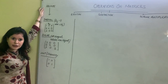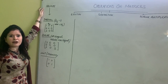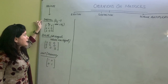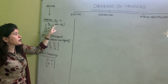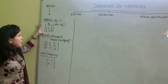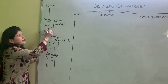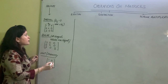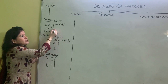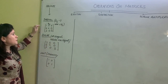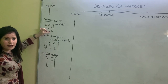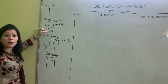We already know what a square matrix is — when rows are equal to columns, we call a matrix square. Next, we need to understand a diagonal matrix. If any element a_ij is zero where i is not equal to j, we say the matrix is a diagonal matrix. For example, position a12 has entry value zero. The positions where i equals j are a11, a22, and a33.